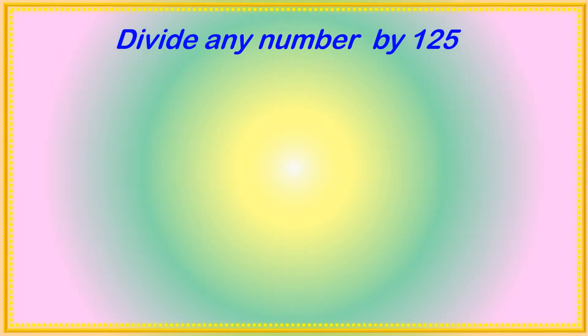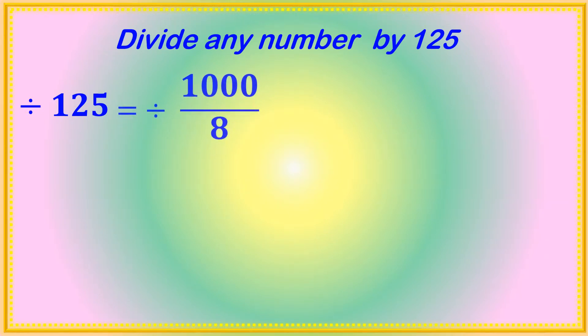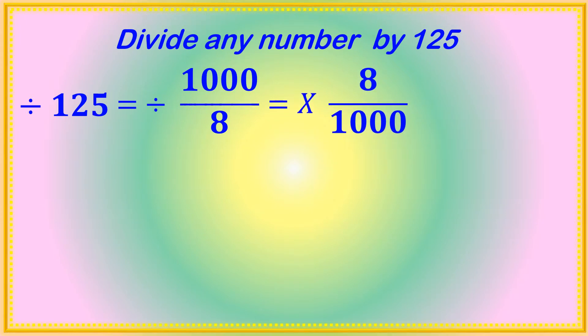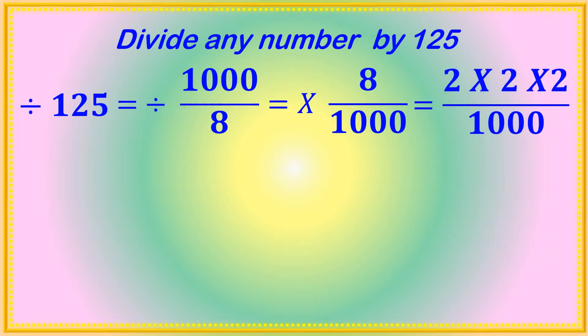Dividing any number by 125 is equal to dividing by 1000/8, because if you multiply 125 by 8 you will get 1000 — both values are equal. So 1000/8 reciprocally is 8/1000. And 8 is factorized as 2 × 2 × 2, so we get 8/1000 = (2 × 2 × 2)/1000.